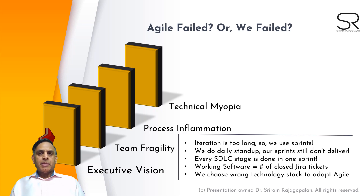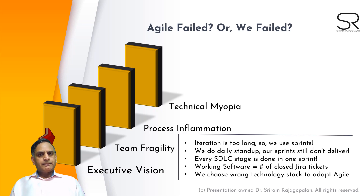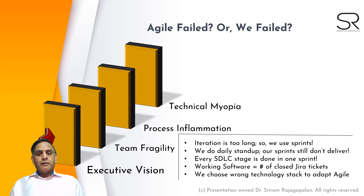But we don't see any value coming out of the daily stand-ups themselves. So is the daily stand-up alone going to be a prescription for following agile? Every STLC stage is done in one sprint — meaning we have a planning sprint, an analysis sprint, a design sprint. Is that really agile? Working software is oftentimes measured by the number of Jira tickets open. We choose the wrong technology, and as a result we do not follow agile correctly.